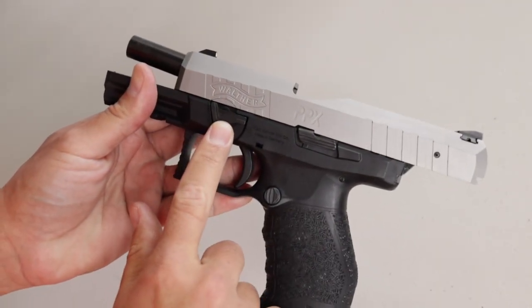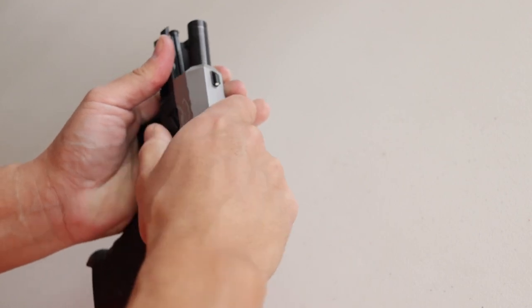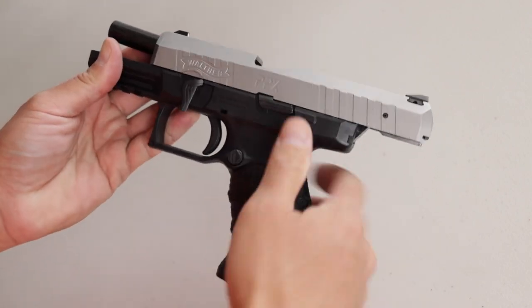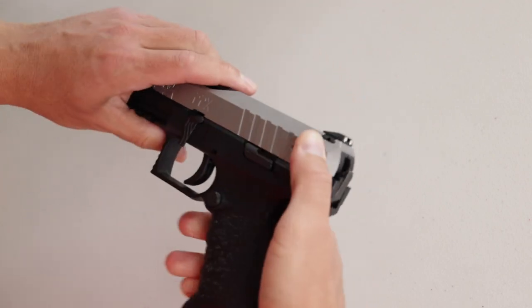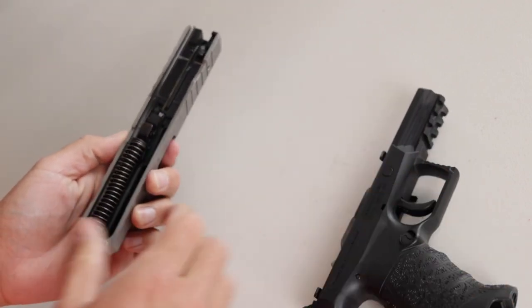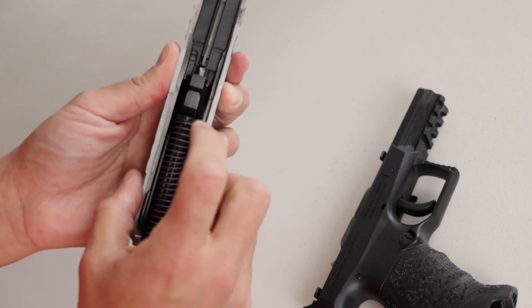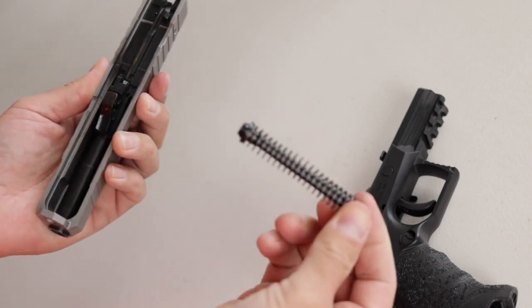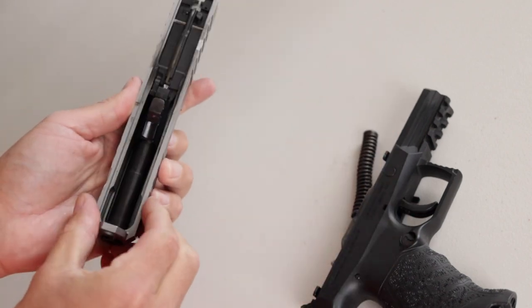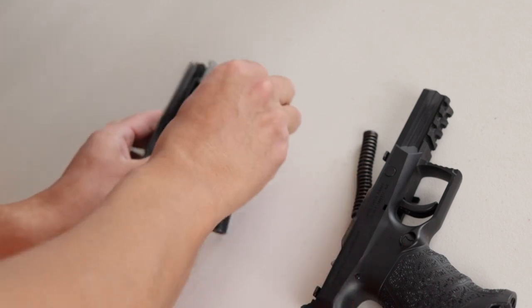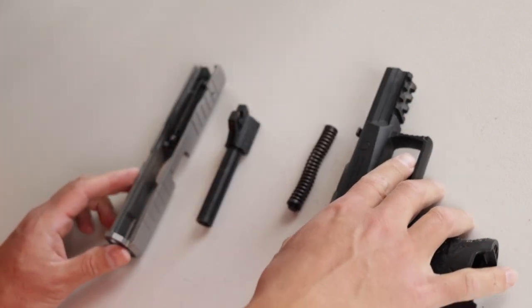Rotate your takedown lever to the 6 o'clock position. Now press the slide stop lever downward and guide the slide off of the frame. Remove the recoil spring by pressing from chamber end to muzzle end. Now you can just grab onto the lug and pull the barrel right out. And this is as far as you need to go for a basic field strip.